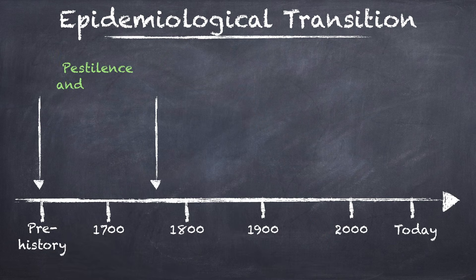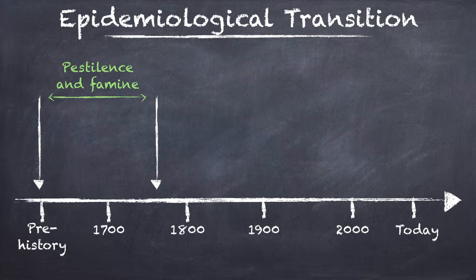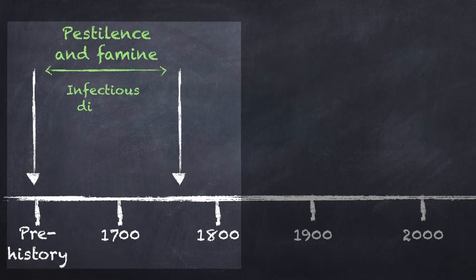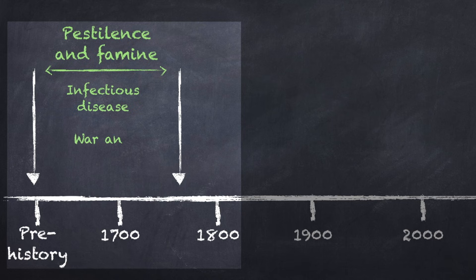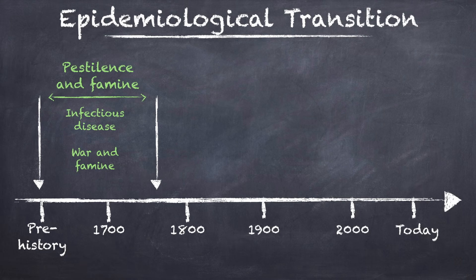Phase one: pestilence and famine. From prehistory to the mid-18th century, infectious disease was the major cause of death, especially once people started living in close proximity in city-states. Travel and trade allowed diseases like plague to have a devastating effect — killing about 25 million people, roughly a third of Europe's population, in just five years. War, famine, poor hygiene, and no access to effective healthcare were also important drivers of death.